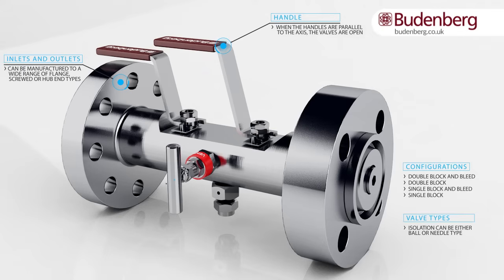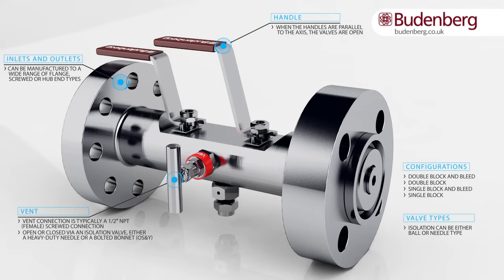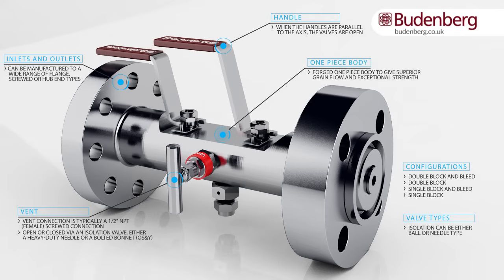The vent connection is typically a half-inch NPT female screwed connection, open or closed via an isolation valve — either a heavy duty needle or a bolted bonnet OS and Y. The forged one-piece body gives superior grain flow and exceptional strength. Residual media is released only after the vent and drain plug have been opened.